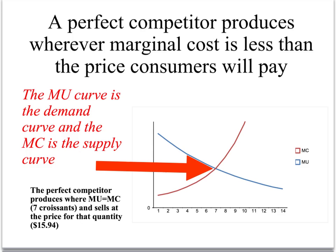They stop at 7 croissants, and they sell these 7 croissants at a price of $15.94. Honestly, how many croissants are you going to be able to sell for $15.94? The average croissant sells for like $1 or $2 — it's got to be a really good croissant. But that's the price we're working with. They produce up to the point where the marginal cost equals $15.94 and they stop. They don't make any more because they cost more than they can sell them for, and they don't make less because they think the price of the croissant is greater than the cost of making them.